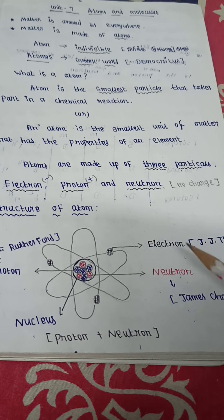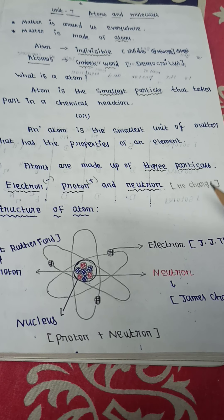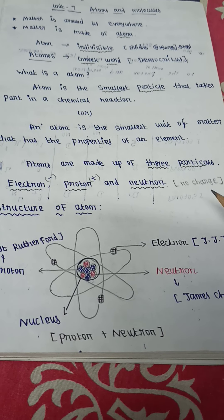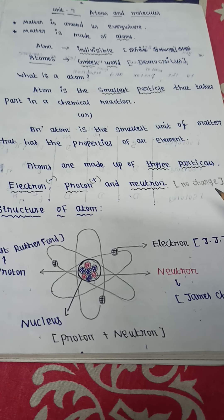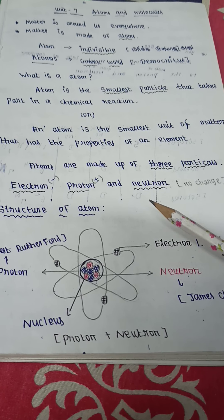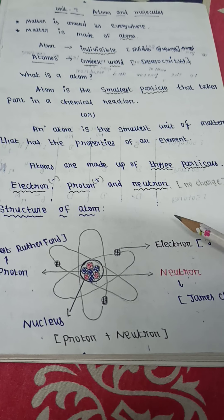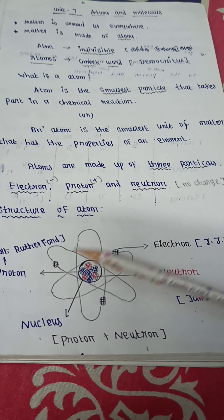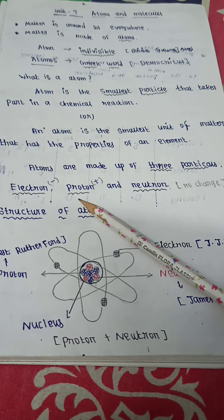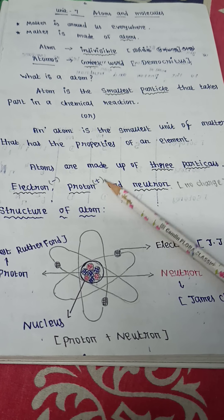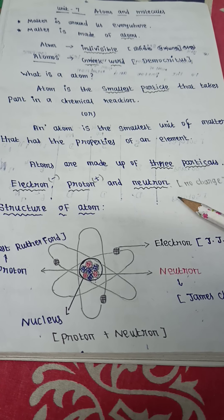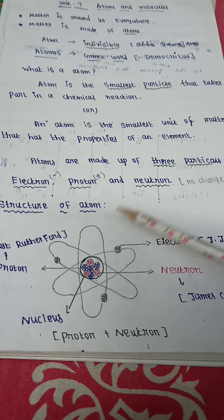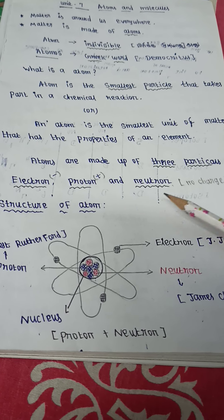Atoms are made up of three main particles. The first element is electron, proton, and neutron. The electron has a negative charge, proton has a positive charge, and neutron has no charge.